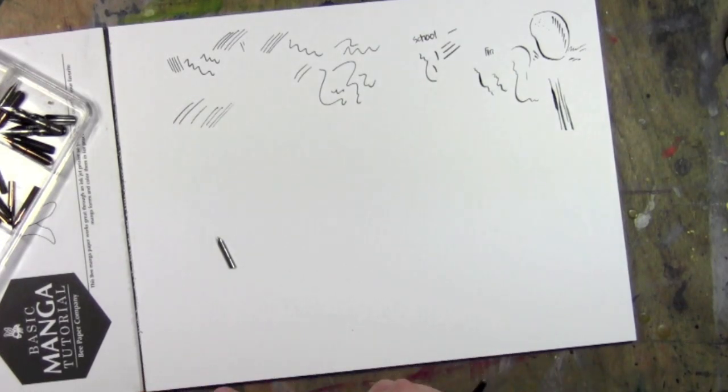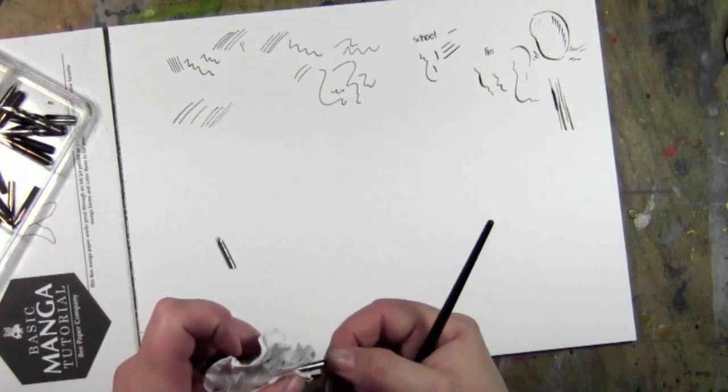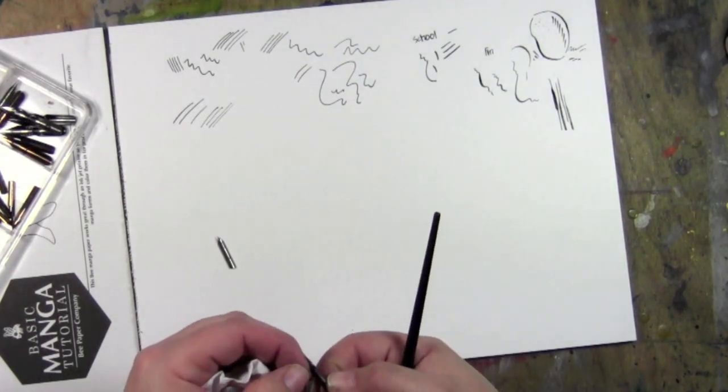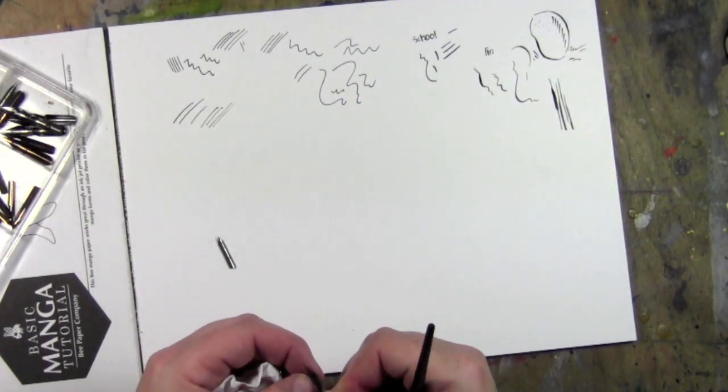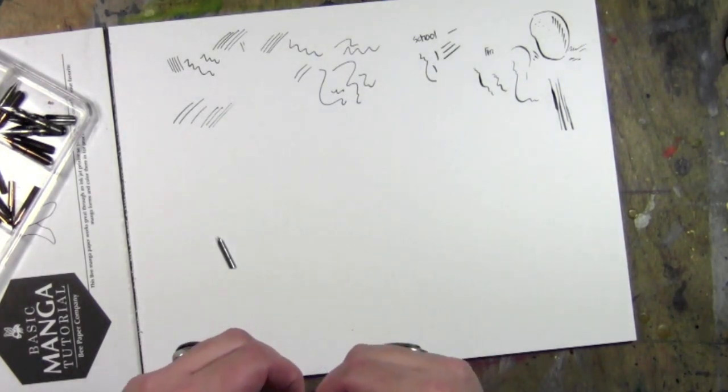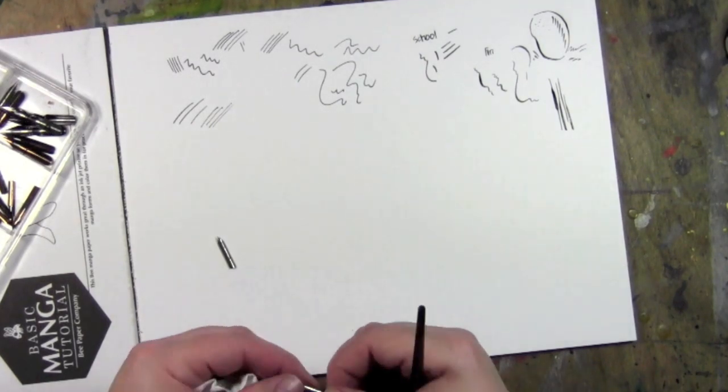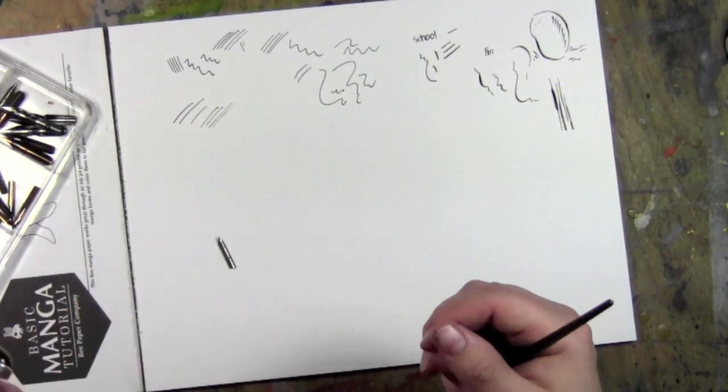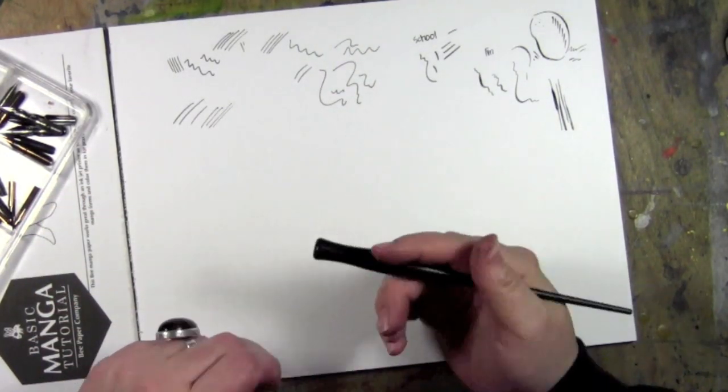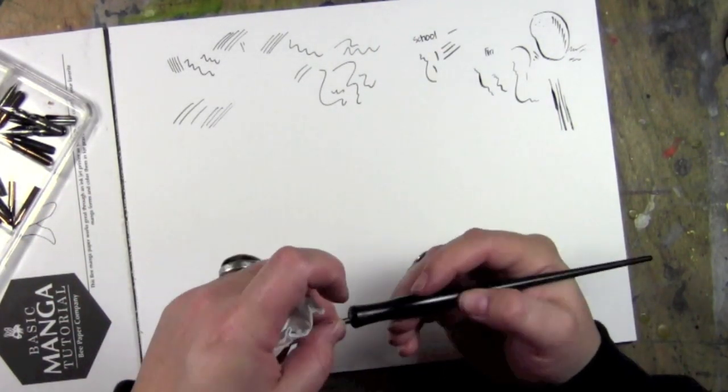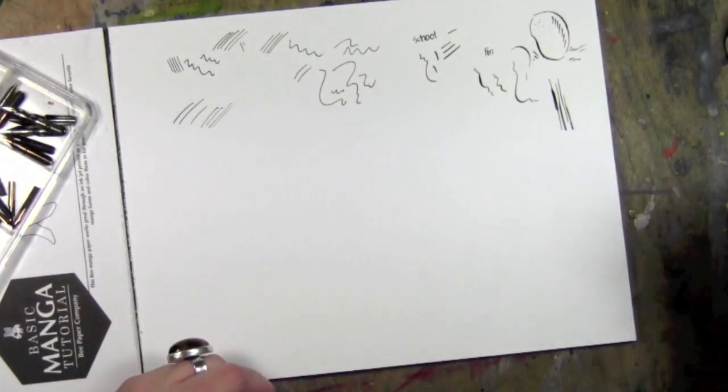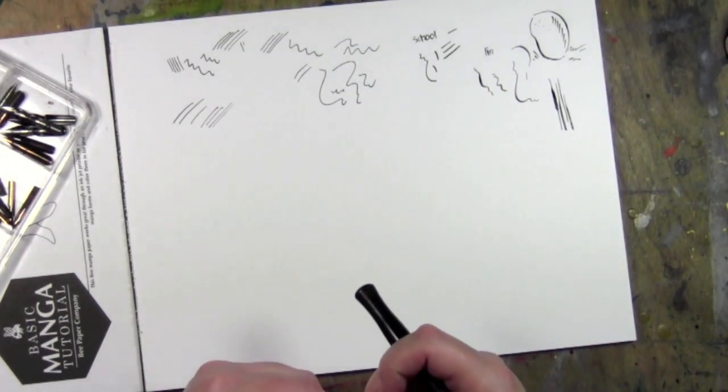This is a mapping pen, it's a Hunt 201. I didn't realize the mapping pen had so much give, that's nice. That's my favorite, by the way, is that kind of dynamic line.